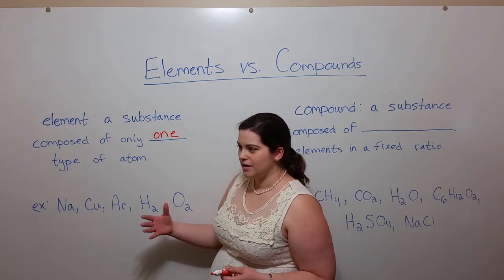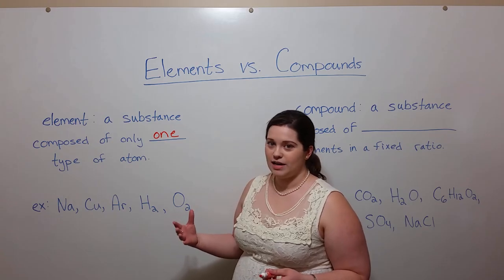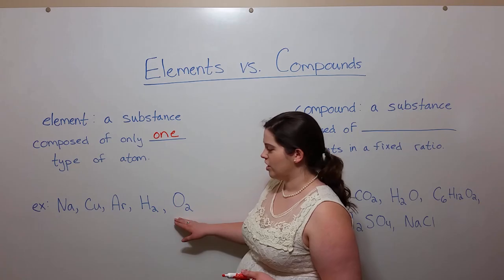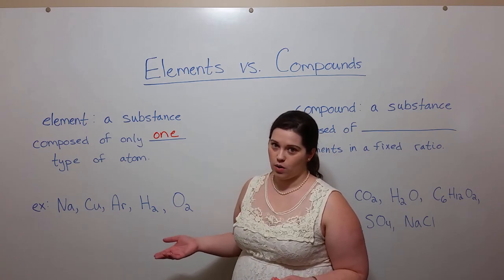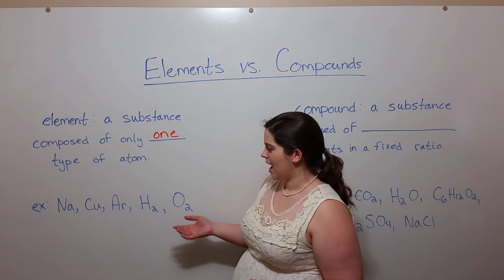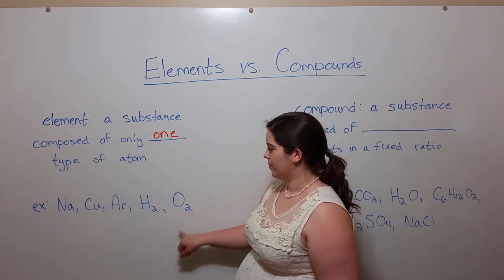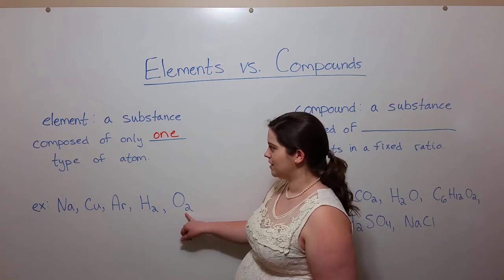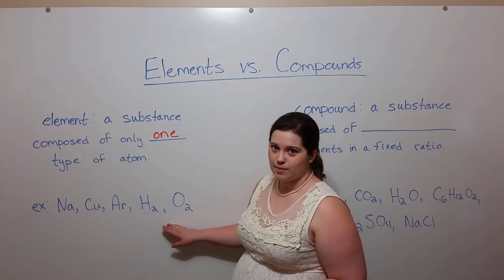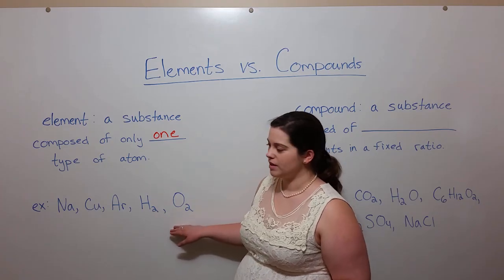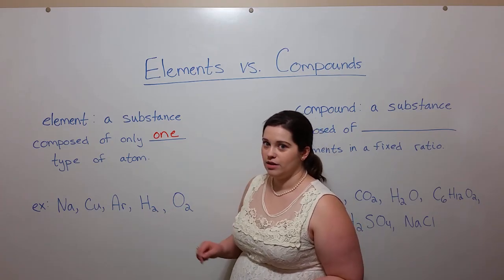Sometimes elements exist bonded to other atoms. For example, hydrogen and oxygen are found in what are called diatomic forms, as are many other gases. So this is when there are two hydrogen atoms bonded together, or two oxygen atoms bonded together. But because they're the same type of atom, we still call these the elemental forms of these particular substances.